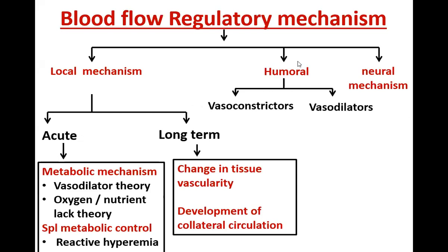Blood flow regulating mechanisms can be classified as local mechanisms, humoral mechanisms, and neural mechanisms. Local mechanisms mean that there are various local changes happening near the skeletal muscle cells — for example, of the right hand — which result in increased blood flow to that hand because it is active at that moment. That is called a local mechanism.